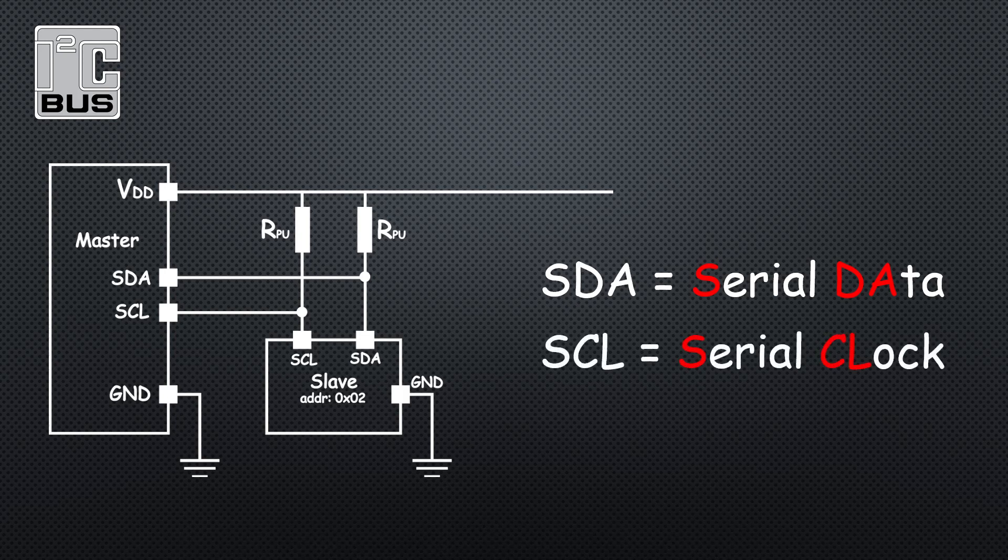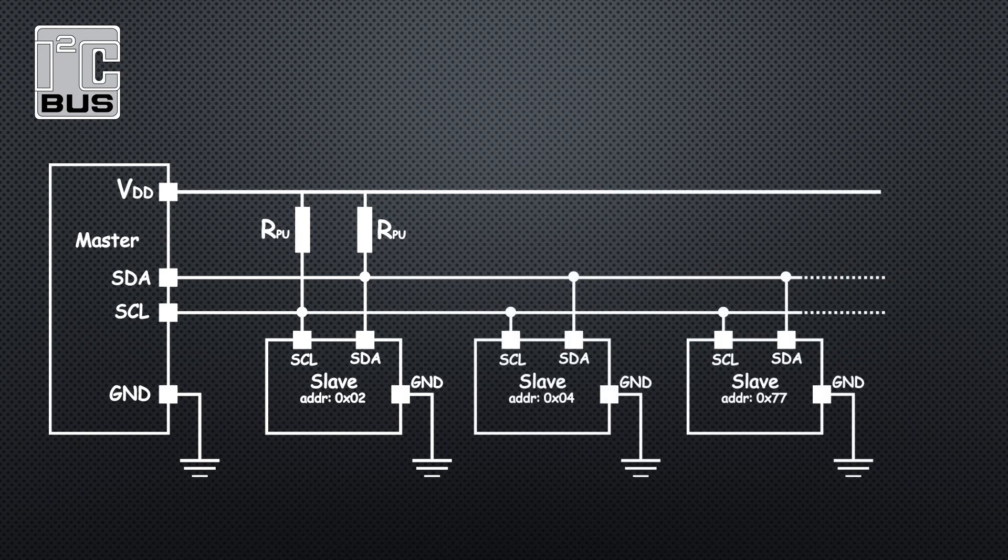That's it—that's all the hardware we need to communicate between two devices. If you want to communicate with more devices, just add them to the bus. This simplicity is what makes I²C popular with users.